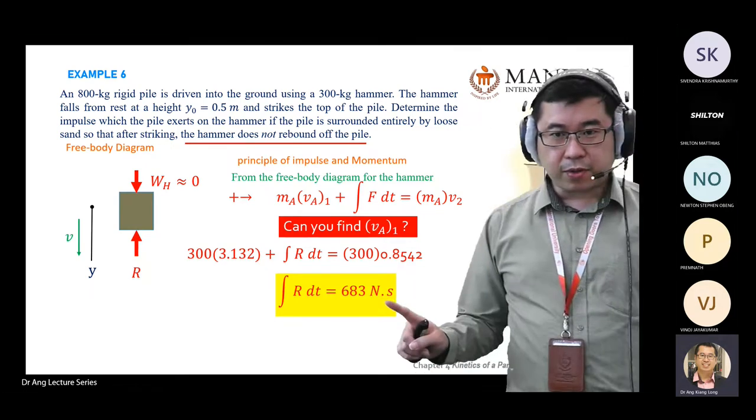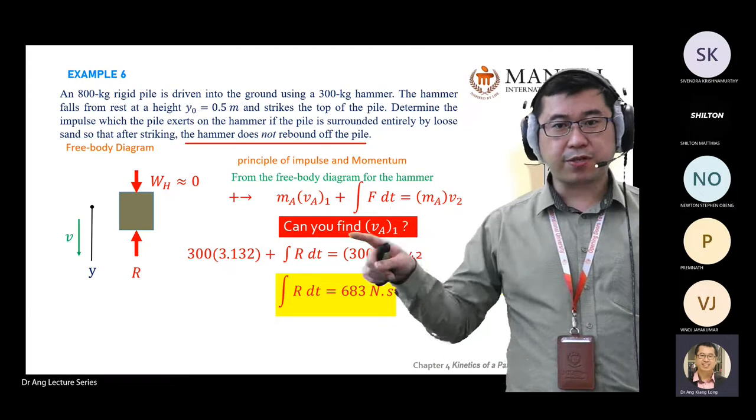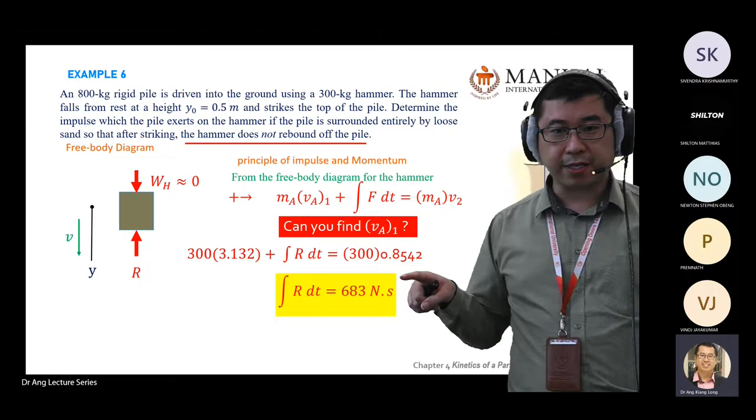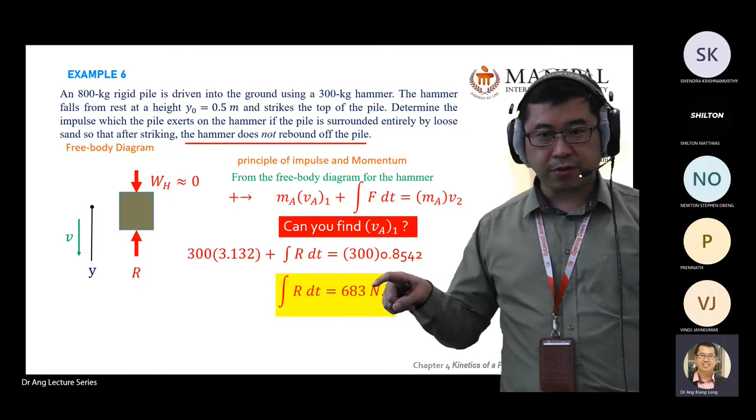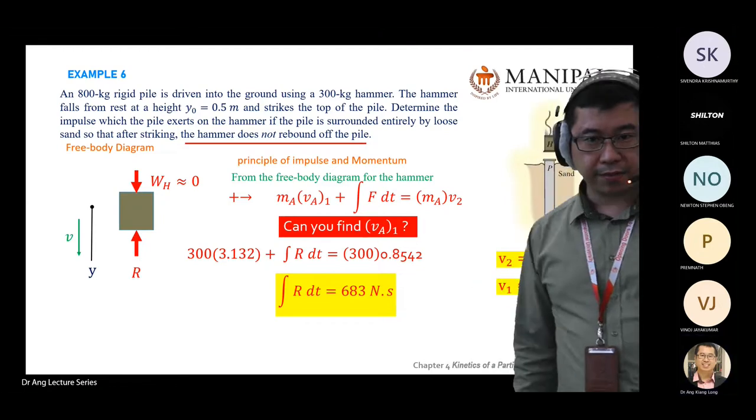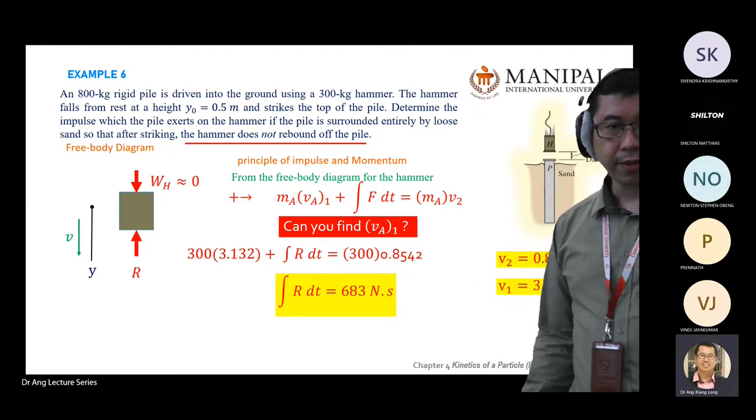Again, the unit for impulse is force multiplied by time. What is the unit for force? Newton. What is the unit for time? Second. So force times time equals newton-second.